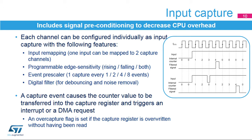The figure shows how a signal is filtered when the filter acceptance is set to four. In the upper case, a clean rising edge capture is triggered four sampling periods after the rising edge. In the lower case, a glitch causes the filter counter to be reset, and the capture happens after four successive samples at high level have been counted. Once the capture trigger is issued, the timer's counter is transferred into the capture register and an interrupt or DMA request can be issued. If a new capture occurs before the previous one has been read, the capture register is overwritten and an overcapture flag is set.